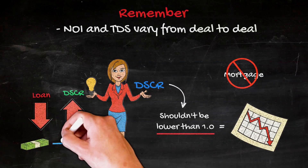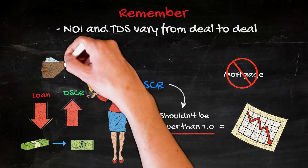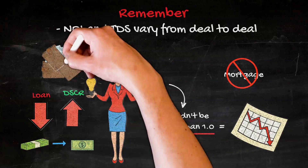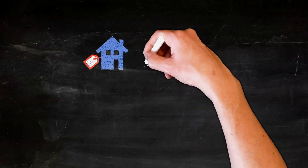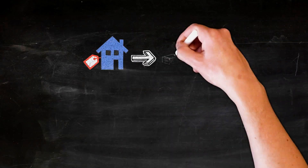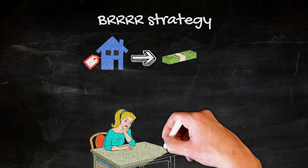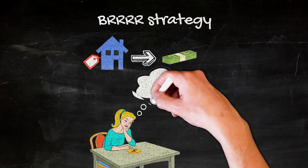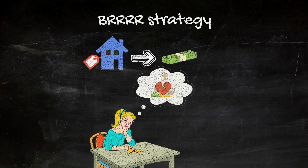Obviously, as the amount of money you can borrow from the bank goes down, the amount of money you have to come up with out of pocket — if you're trying to buy the property — goes up. Similarly, if you're trying to do a cash-out refinance, as with the BRRRR strategy, a lower loan amount also means that you may not be able to get all of the money you initially invested back out.